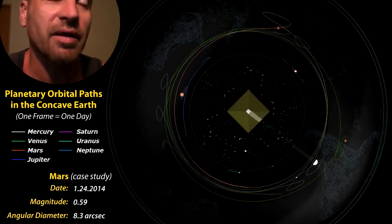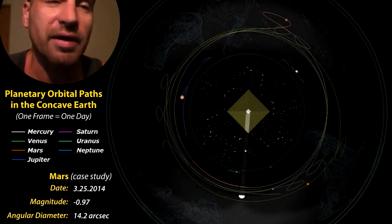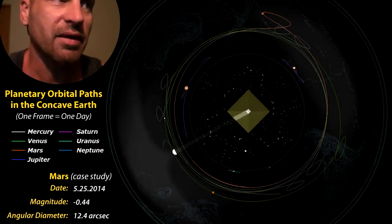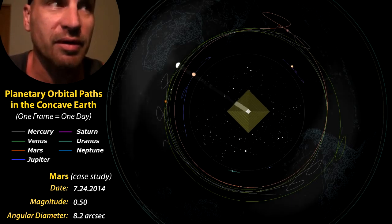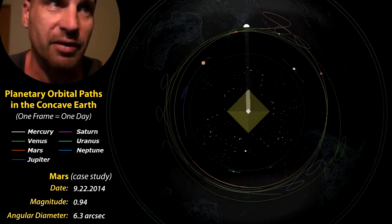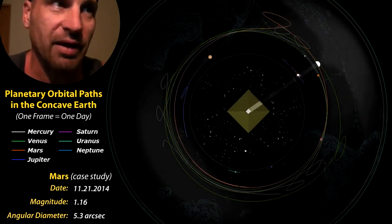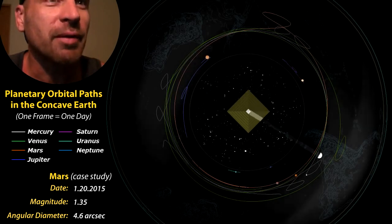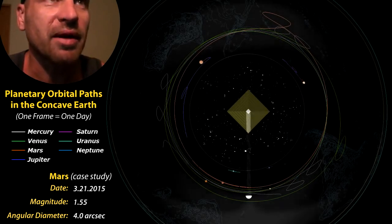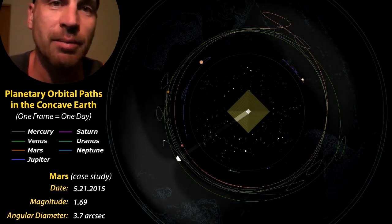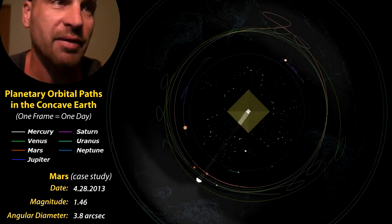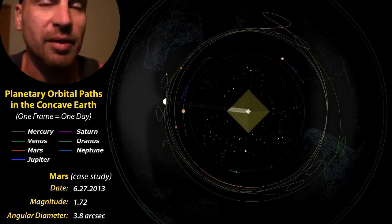It also increases its brightness. The magnitude is measured by the lower the number makes it a brighter object in the sky. So during the retrograde, the planets are going to become bigger. The angular diameter is going to get bigger and they're also going to become brighter.